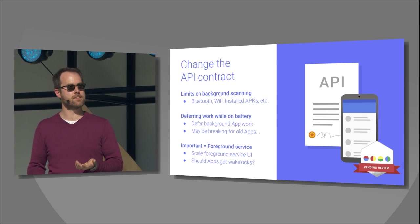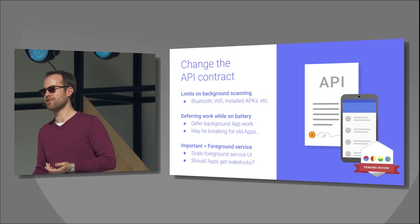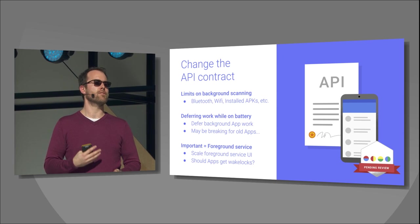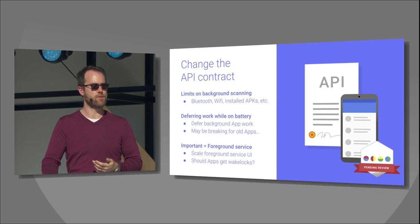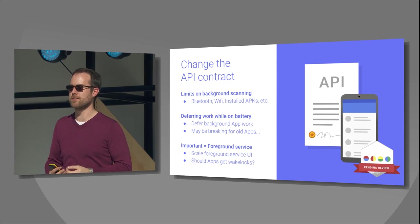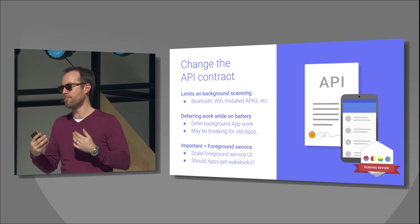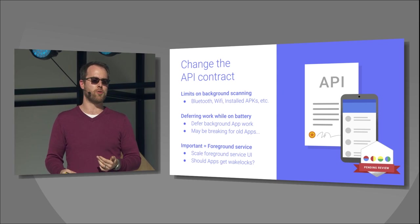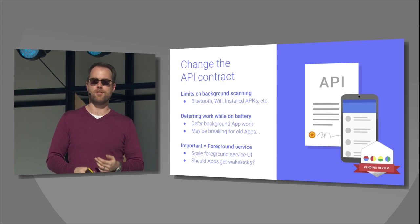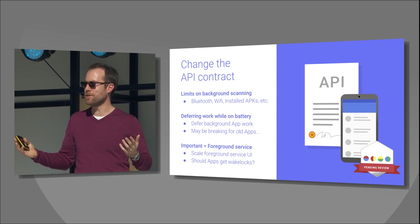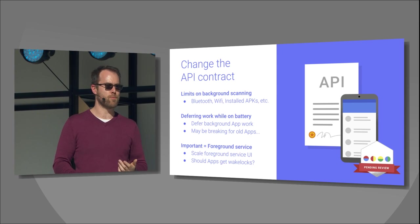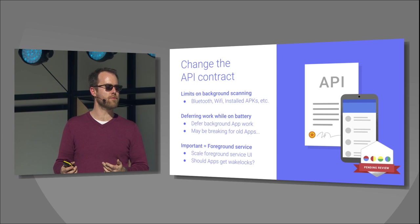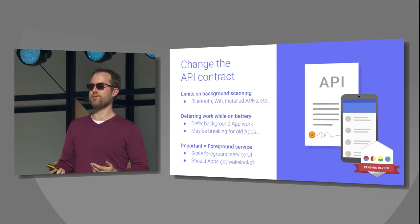We also have to beef up the idea of foreground service and figure out how, as an API surface and UI construct, it doesn't turn into all applications rushing to the exits of foreground service and putting us back in the same mess. We want to find a balance so that applications can genuinely do everything they need, and in the extremes, the user can articulate approval. Hopefully that's going to result in a much more stable, much more reliable device in the long run.